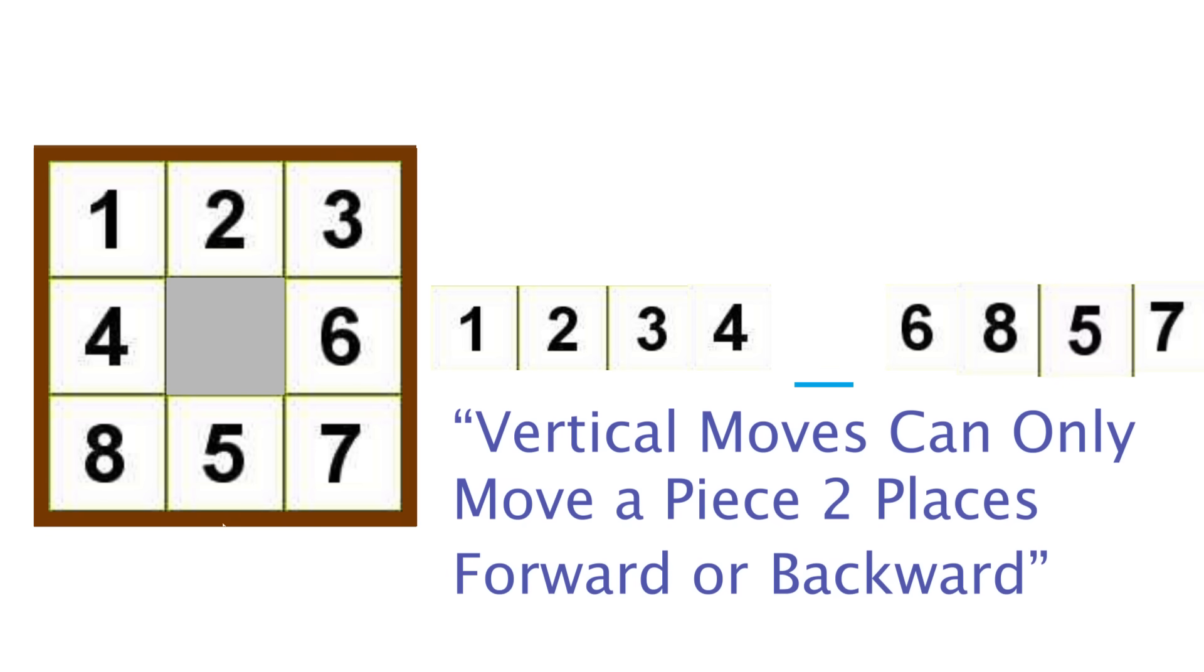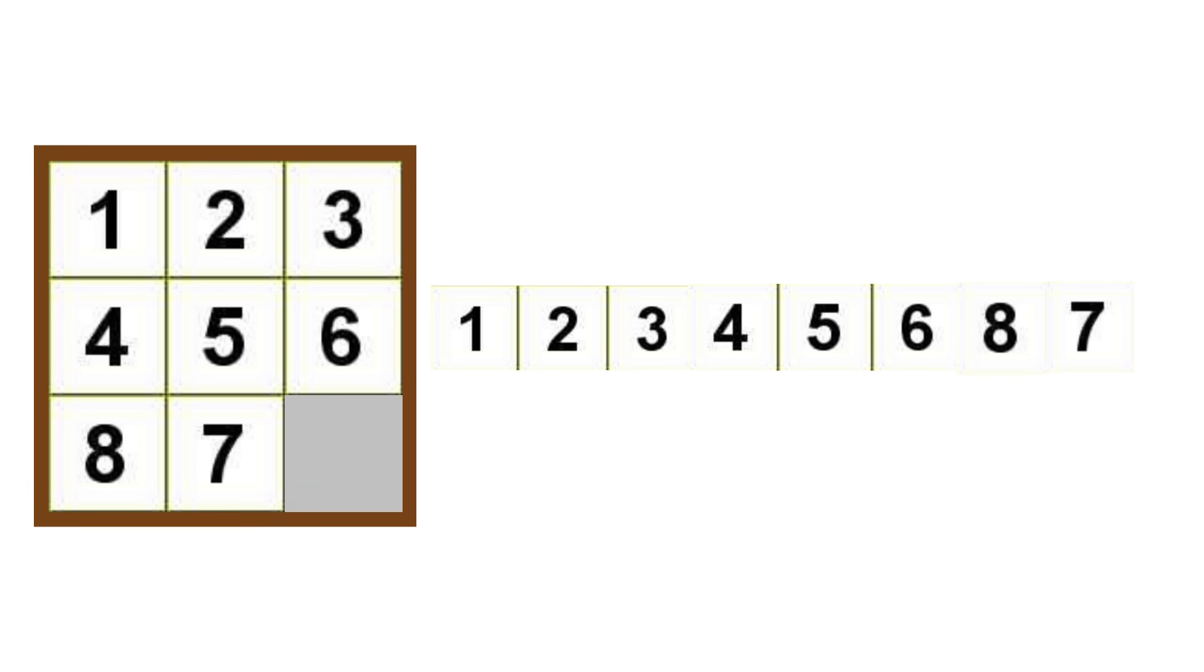Remember this, vertical moves can only move a piece two places forward or backward. Now let's go back to our initial setup real quick, with the 7 and 8 out of order, and look at how many pairs of numbers are out of order.